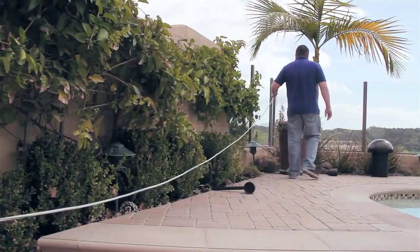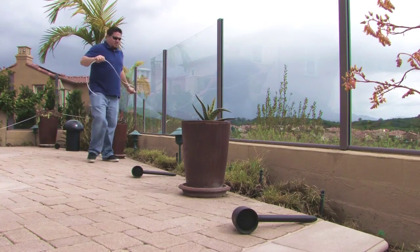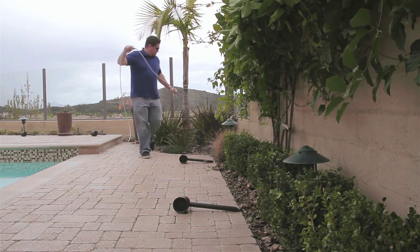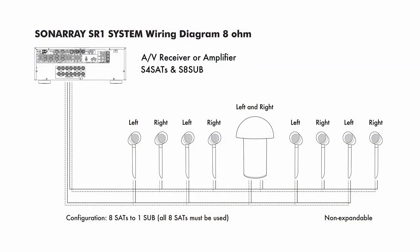Starting from the furthest speaker placement, run the wire to a location where your audio specialist can connect the feed to your amplifier or receiver. Leave the wire attached to the spool until the last speaker has been connected.